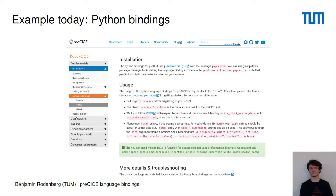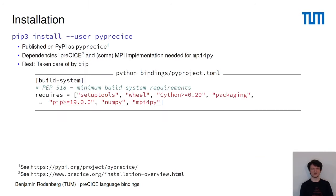The layout of my talk today follows what we present in the documentation on the Python bindings. First, I'll show the installation process, and afterwards some user code samples. If you want to install the Python bindings, you simply use pip3 as your Python package manager and install them with: pip3 install pyprecise. You can use the user flag if you want. Since the Python bindings are published on PyPI as pyprecise, pip directly downloads and installs them. Be aware that Precise and an MPI implementation are needed as dependencies.